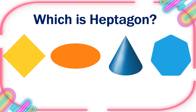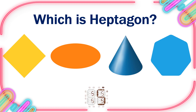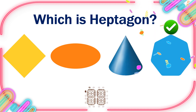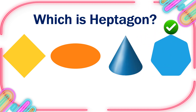Which is Rhombus? Heptagon? 10, 9, 8, 7, 6, 5, 4, 3, 2, 1, 0. This is the right one.